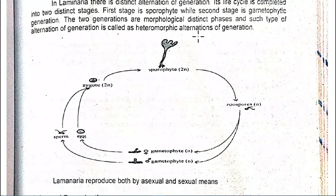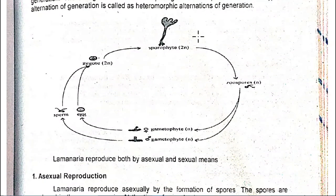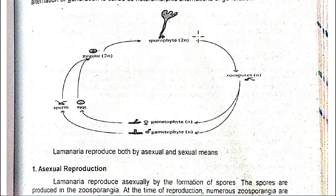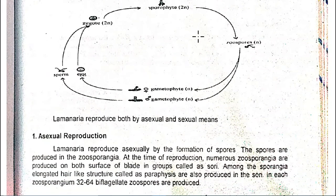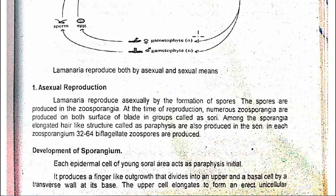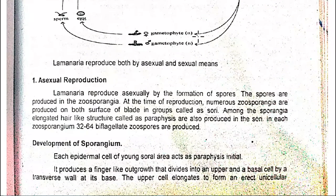The sporophyte and gametophyte are completely different structures. The sporophyte (2n) produces zoospores (n), and when zoospores fuse through fertilization they form the gametophyte — a different generation. The male and female gametophytes produce gametes and sperm, which fuse to form a zygote that becomes the sporophyte again. Laminaria reproduces both by asexual and sexual means.